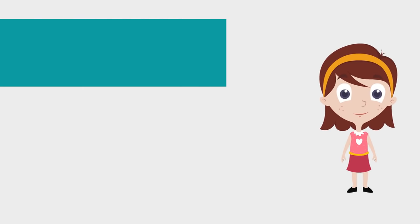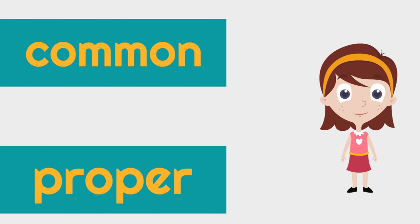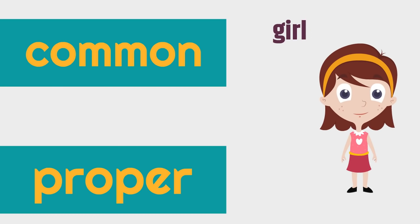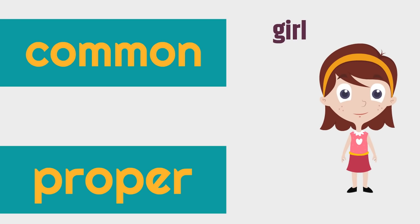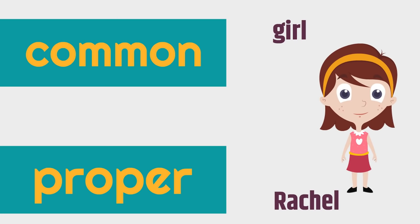Here's another example. Here is a girl. Girl would be the common noun because a common noun is a type of person, place, or thing. But this girl's name is Rachel. Rachel would be the proper noun because it's a specific person, place, or thing. So the common noun is girl. The proper noun is Rachel.